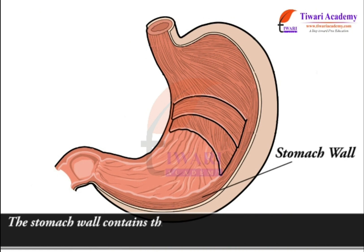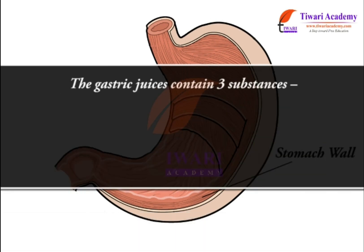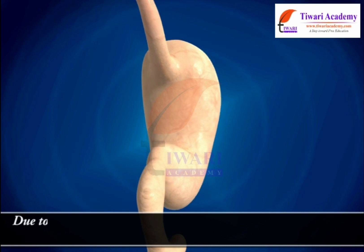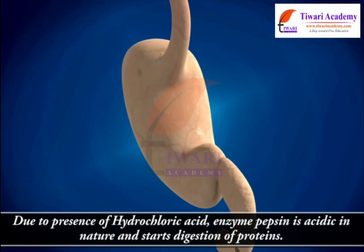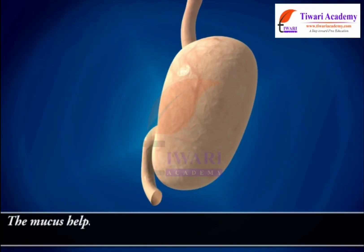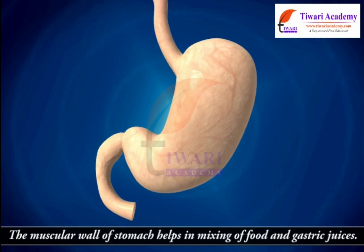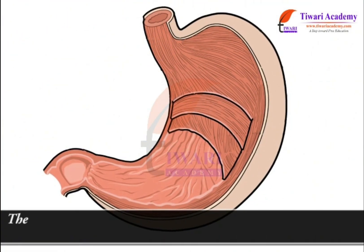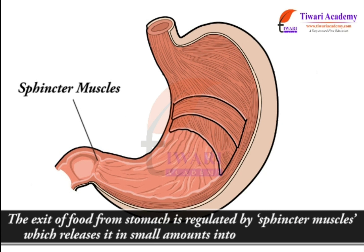The stomach wall contains tubular glands which secrete gastric juices. The gastric juices contain three substances: hydrochloric acid, enzyme pepsin and mucus. Due to the presence of hydrochloric acid, enzyme pepsin is acidic in nature and starts digestion of proteins. The mucus helps to protect the stomach wall from its own secretion of hydrochloric acid. The muscular wall of the stomach helps in mixing food and gastric juices. The exit of food from the stomach is regulated by sphincter muscles, which release it in small amounts into the small intestine.